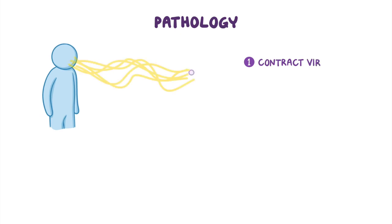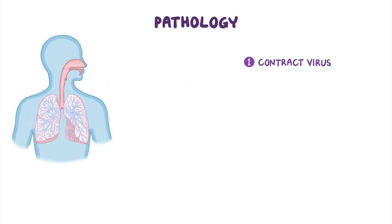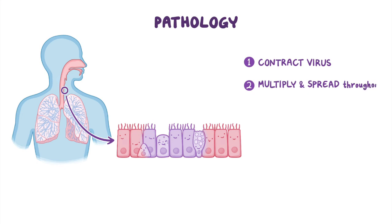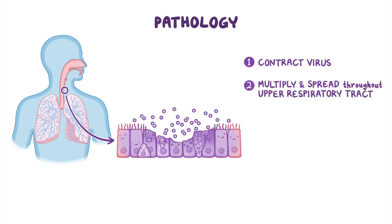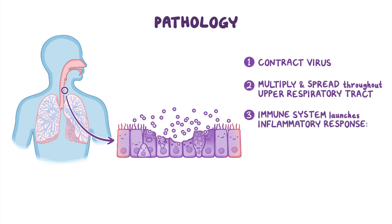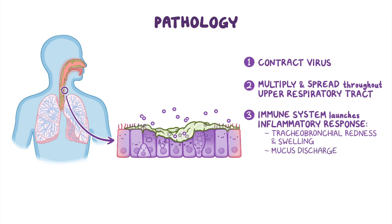After a person contracts the influenza virus, these infectious pathogens typically multiply and spread throughout the cells lining the upper respiratory tract. In response to this, the immune system launches an inflammatory response, which results in visible tracheobronchial redness and swelling, as well as mucus discharge as these cells start to produce more mucus that can help trap and eventually expel these pathogens.